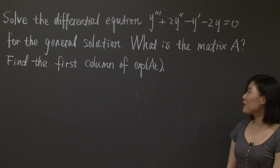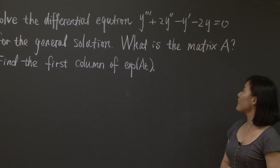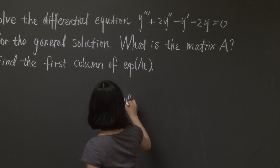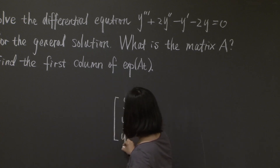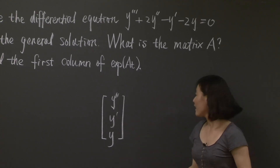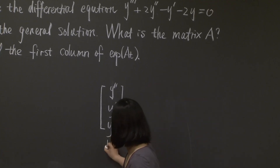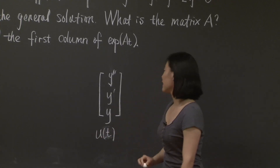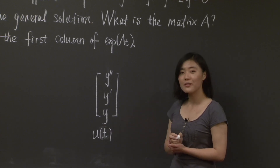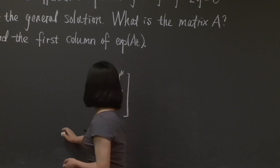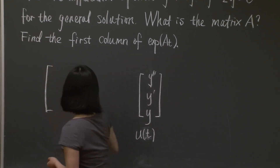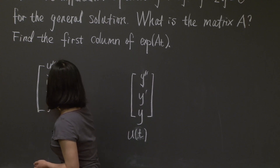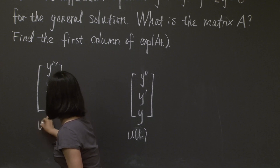Let's work together to transform this problem into linear algebra. The idea is to put y double prime, y prime, and y together as a vector, and let me call this vector u. So of course, vector u is also a function of t. If this is u, what's going to be u prime? u prime is going to be the derivative of every coordinate: that's y triple prime, y double prime, and y prime.